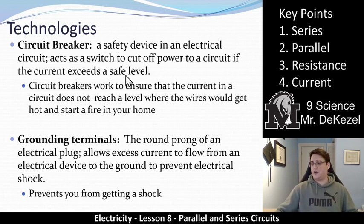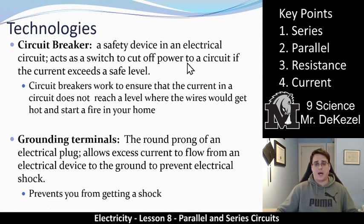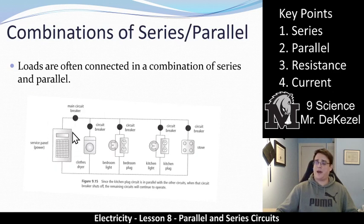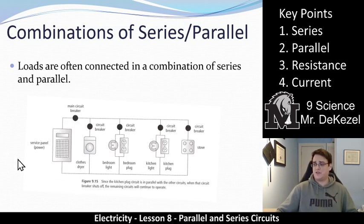Circuit breakers are a safety device in an electrical circuit that acts as a switch to cut off power if the current exceeds a safe level. They ensure that the current does not reach a level where the wires would get too hot and start a fire. In this picture, we have our main power panel with a main circuit breaker, and then individual breakers for each part of the house. You could cut the clothes dryer breaker and it would go off, but the bedroom lights, kitchen plugs, and stove would all stay on. If you cut the main breaker, that stops the entire house circuit — everything goes off. Each circuit breaker is a safety valve for the appliances connected after it.